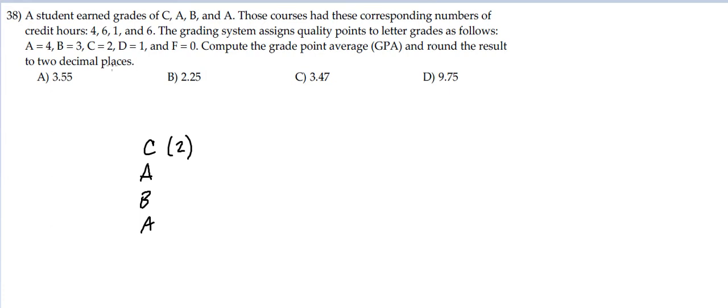So we had C, A, B, and A. Remember, C is worth 2 points - they tell us this here. B is worth 3, and A is 4.